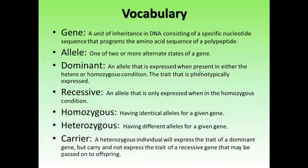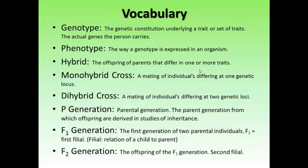Genotype and phenotype are important words to keep separate. The genotype is the actual allele combination that an organism has. For example, someone with brown eyes can still carry a blue-eyed gene in their genotype. The phenotype is simply the expression of an individual's genetic makeup — a brown-eyed individual. A phenotype does not describe the genes that are present; it only describes the expression of the genetic makeup.